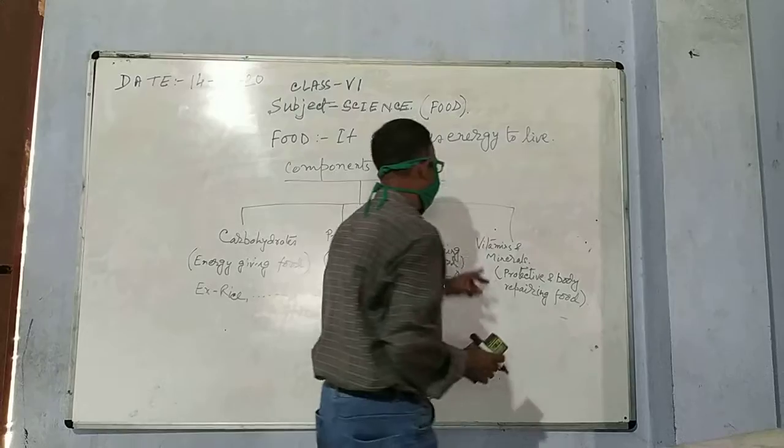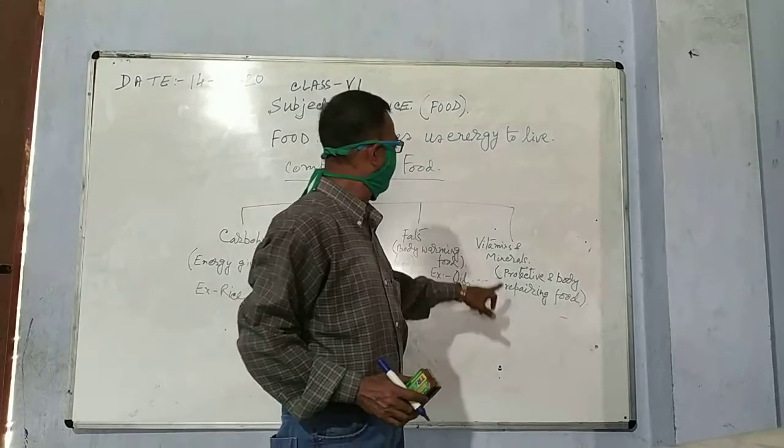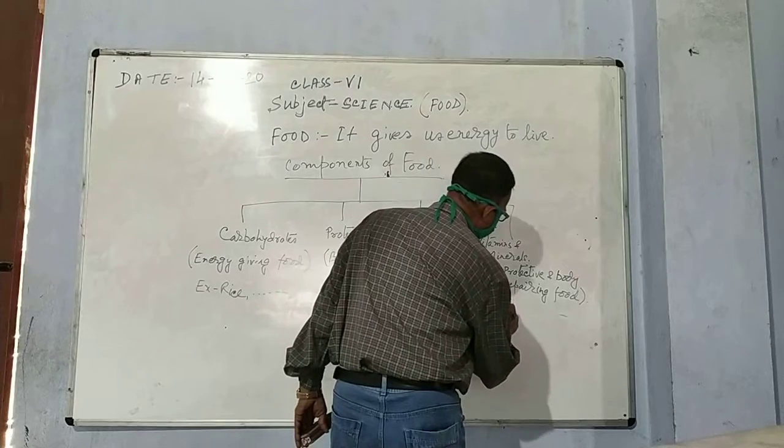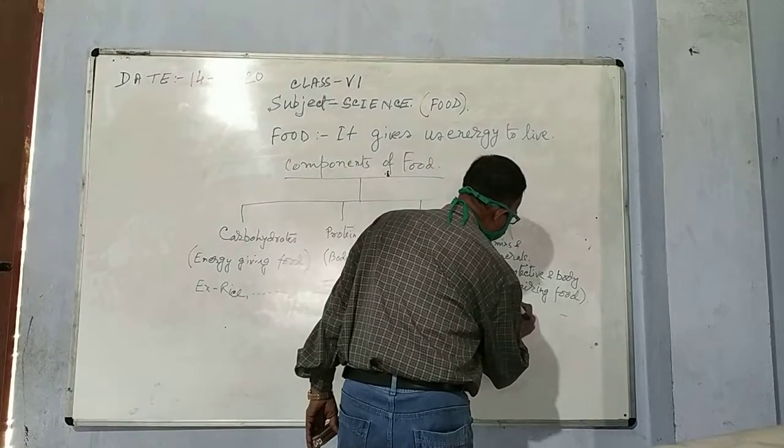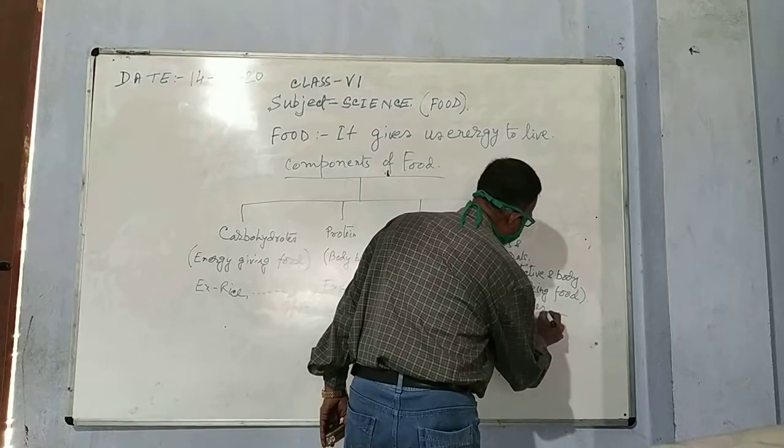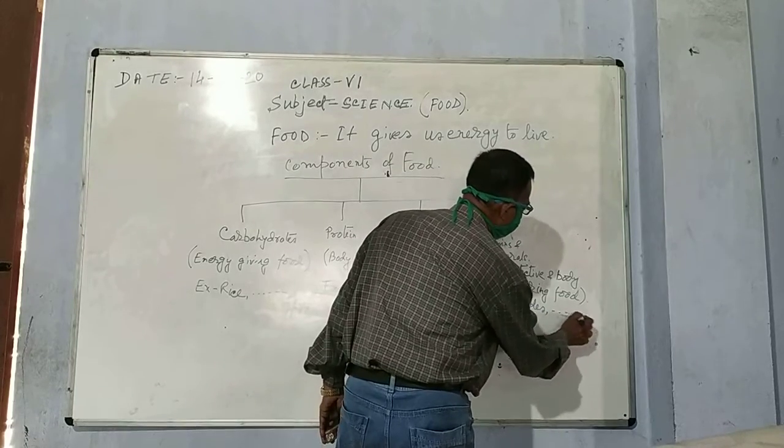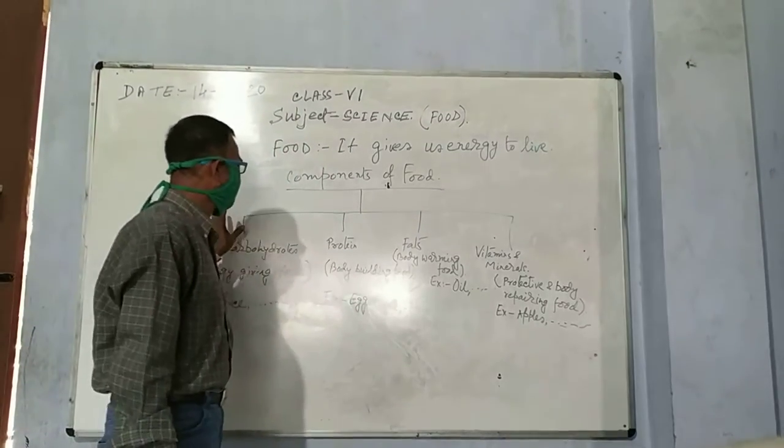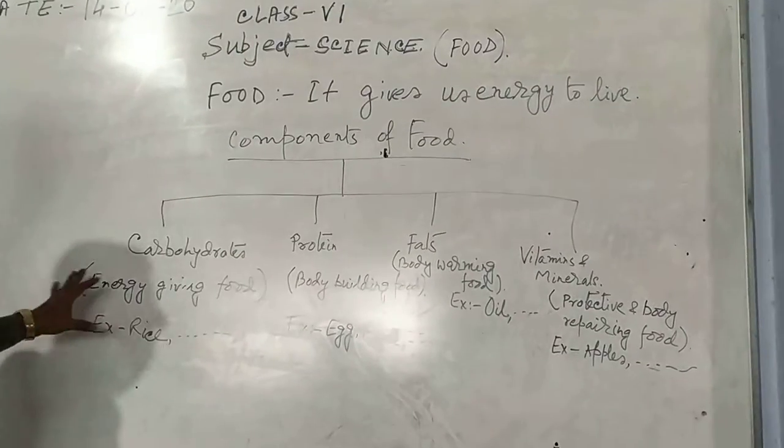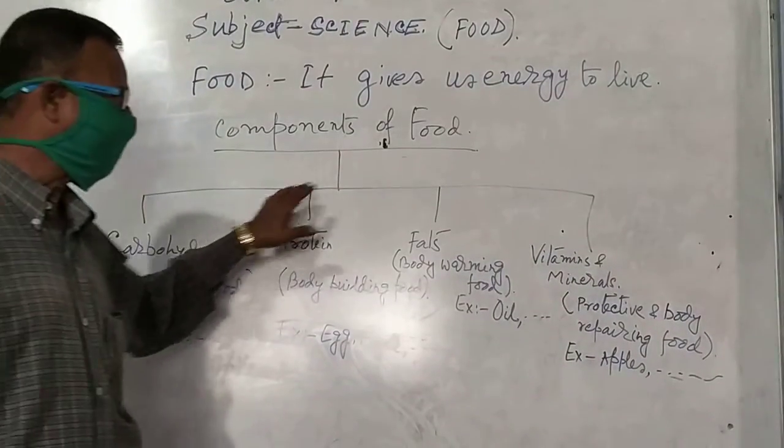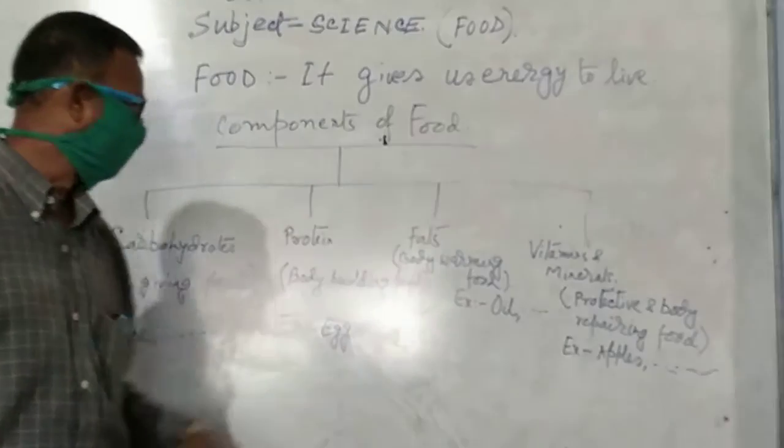It is described as protective and body repairing food. So four types of foods, components of foods are described as carbohydrates, proteins, fats, and vitamins and minerals.